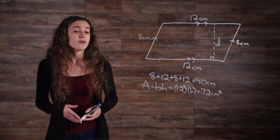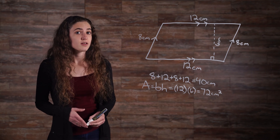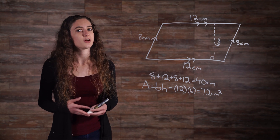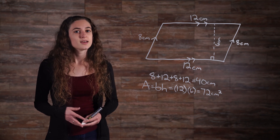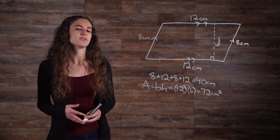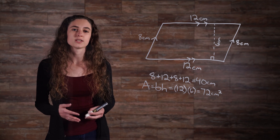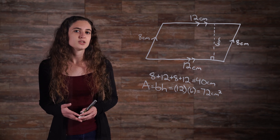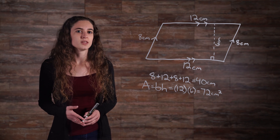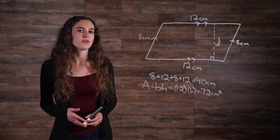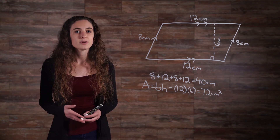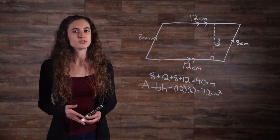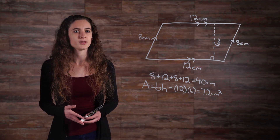We need to be sure that we have our units right. For area, the units are always squared, while for perimeter, they are not. The area of our parallelogram is 72 cm squared, or 72 square centimeters. Notice that we didn't use the measure of the left or right sides to find the area of our parallelogram. That measure was necessary to find the perimeter, but it is not used at all in our formula for area.